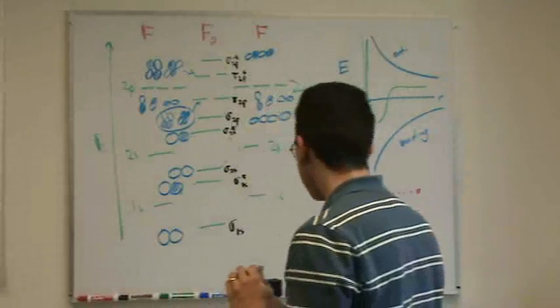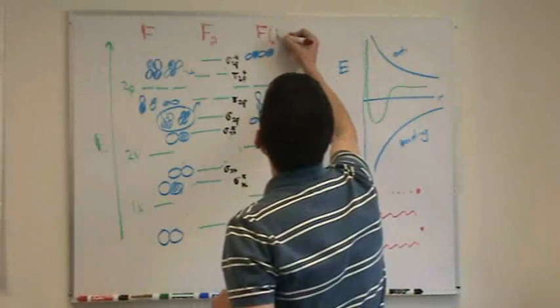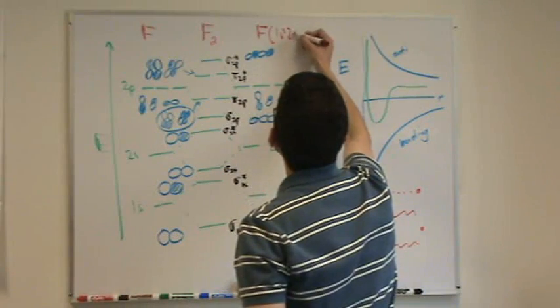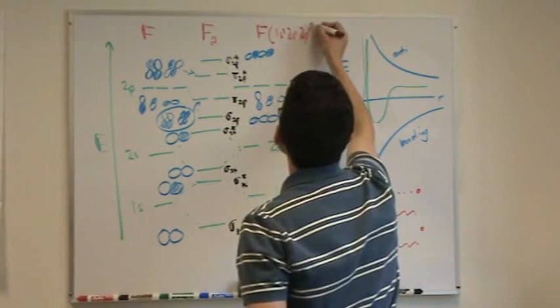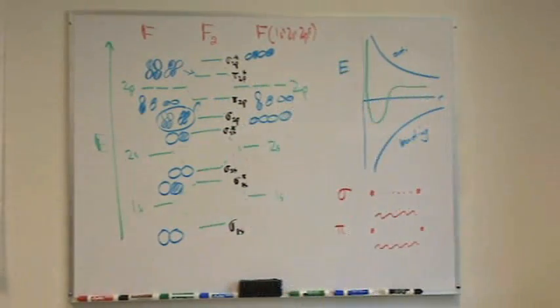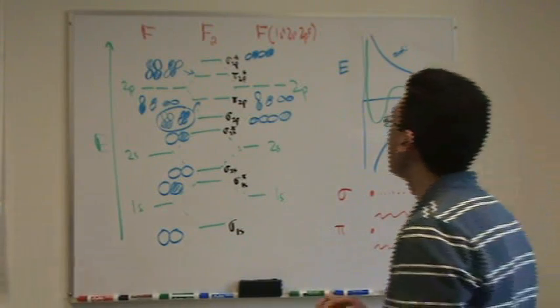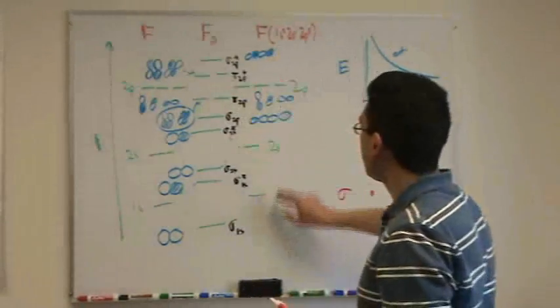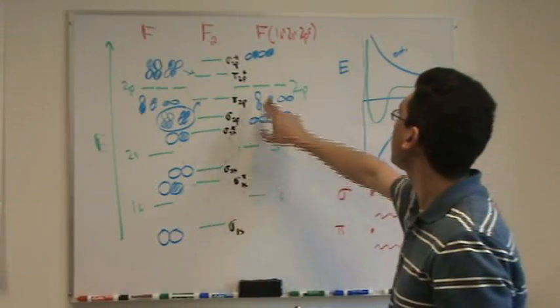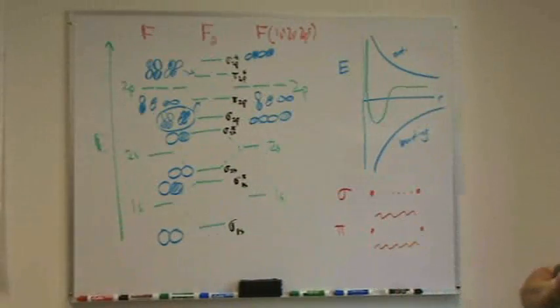So fluorine, if you look at your periodic table, is 1s2, 2s2, 2p5. So make sure you're still good with your electronic configuration. And so you just go and pay 1s2, so you put two electrons here, you're going to put two here, and five here. So that's what I'm going to do right now.